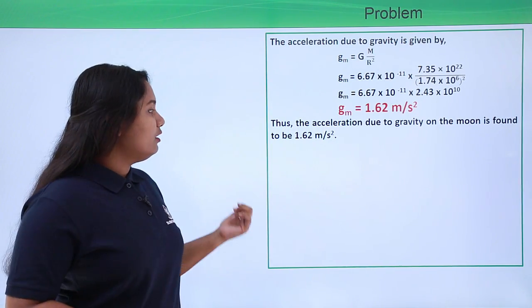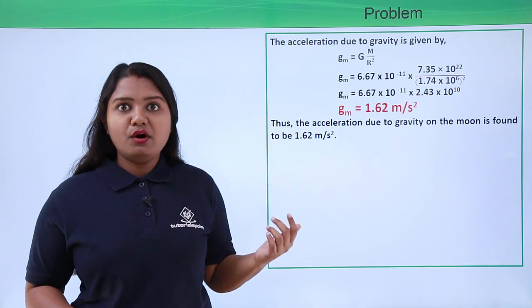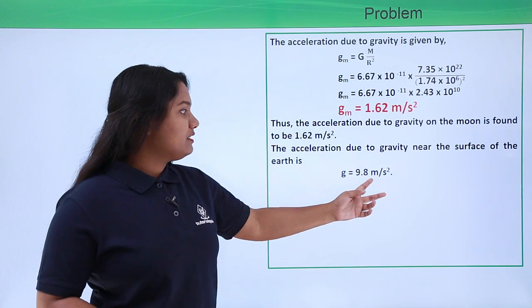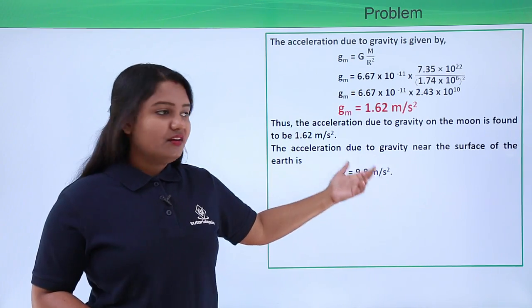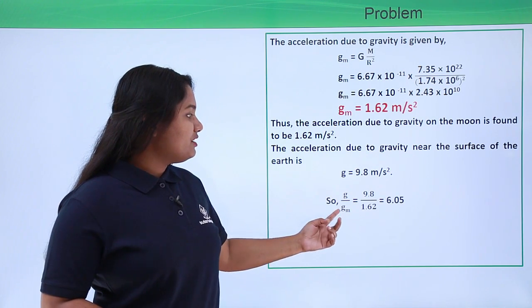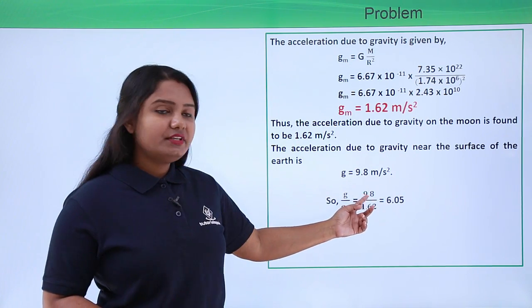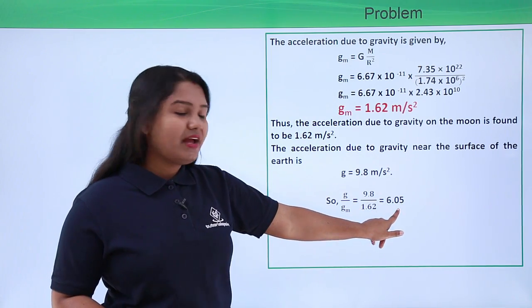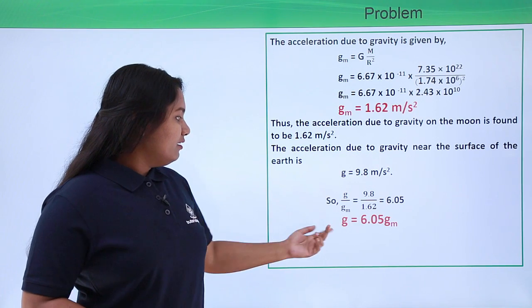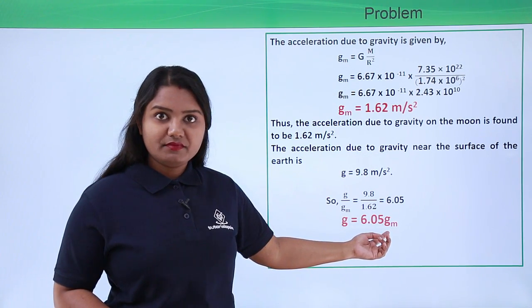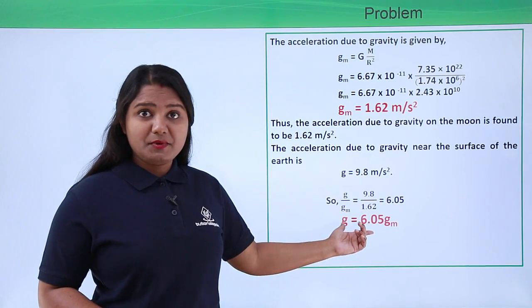Now we know that the value of g on earth is 9.8 meters per second squared, right? So let us divide these two values. So g by gₘ will be equal to 9.8 divided by 1.62, which comes out to be 6.05 approximately.